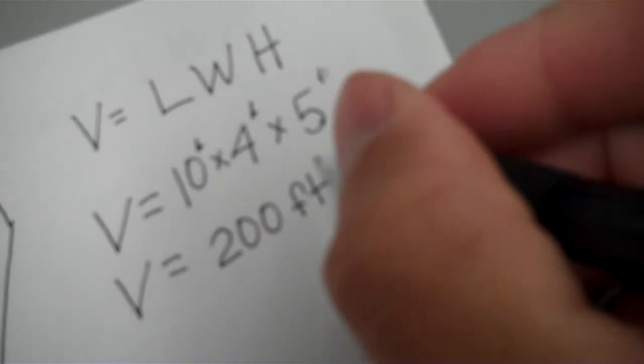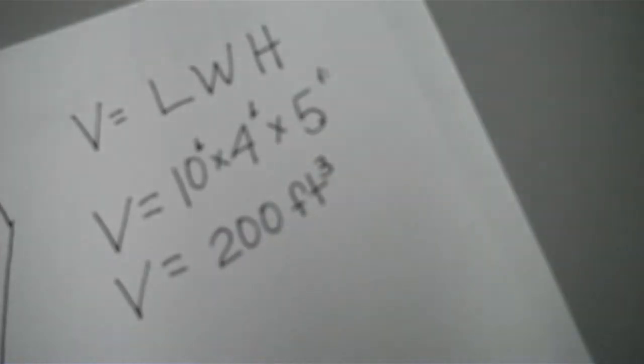Feet. You're multiplying this one by this one by this one, so that'd be feet cubed. That would be the volume of that rectangle.